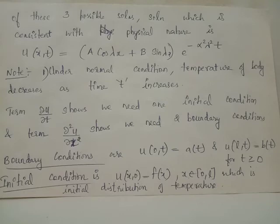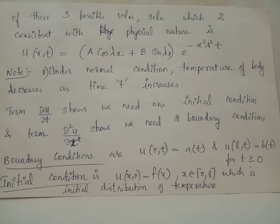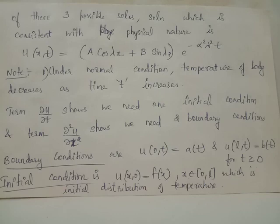The boundary conditions are u(0, t) = a(t) and u(l, t) = b(t). Here u(0, t), where x = 0, represents the temperature distribution at the beginning of the rod, and u(l, t), where x = l, represents the temperature at the endpoint, since the rod has total length l. Thus a(t) and b(t) denote the end temperature distributions. The initial condition is given by u(x, 0) = f(x), which indicates the temperature distribution at t = 0, known as the initial temperature distribution.